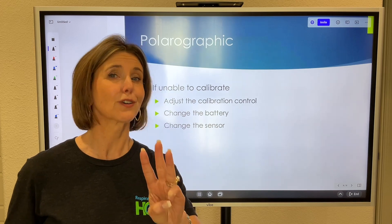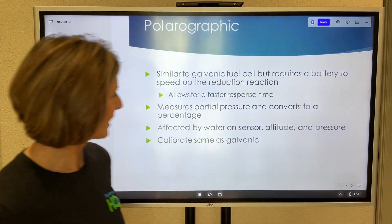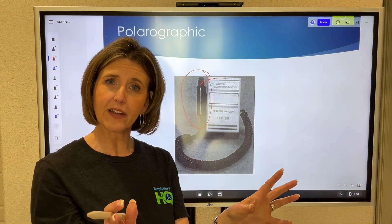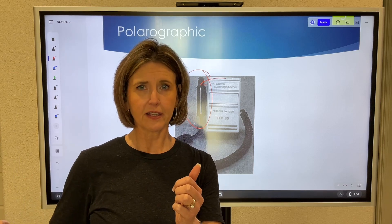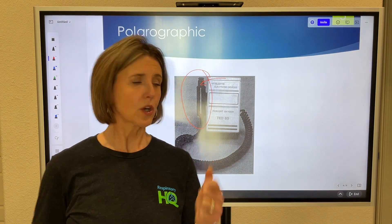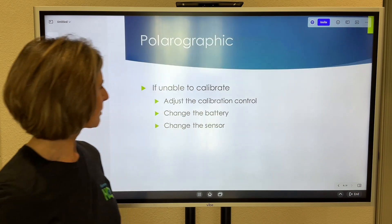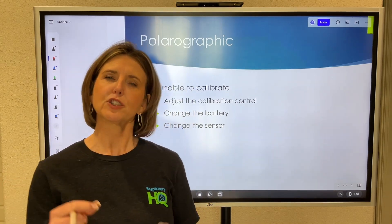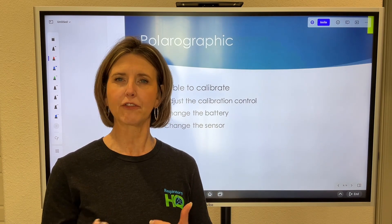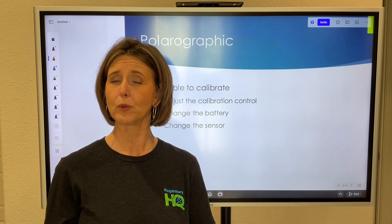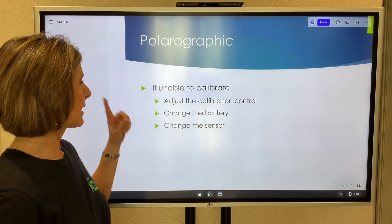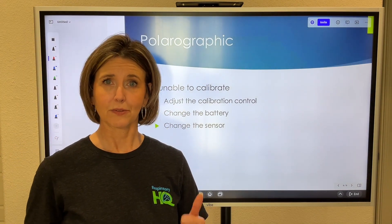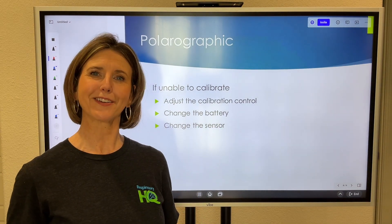The third thing to do is change the sensor. On a polarographic oxygen analyzer this sensor still contains an electrolyte solution — same as the galvanic fuel cell, just called a sensor on the polarographic instead of a fuel cell. If the electrolyte solution has dried out, you need to change the sensor. These sensors typically need to be changed every year to a year and a half. So three things in order: if it doesn't calibrate — number one, adjust the calibration control if you're just a little bit off; number two, change the battery; number three, change the sensor. Hope this helps — this should cover most questions you encounter on the TMC or CSE. See you soon.